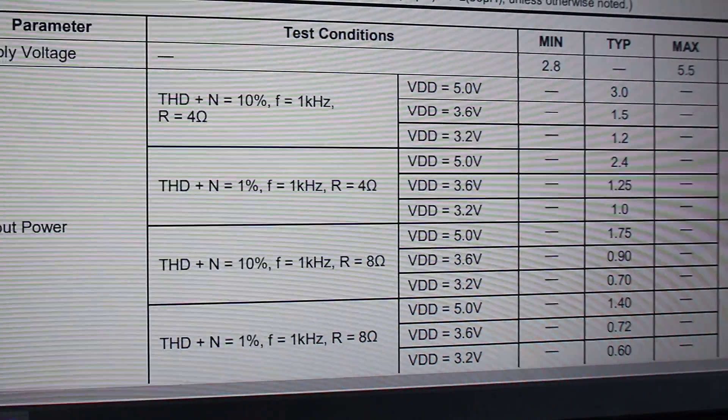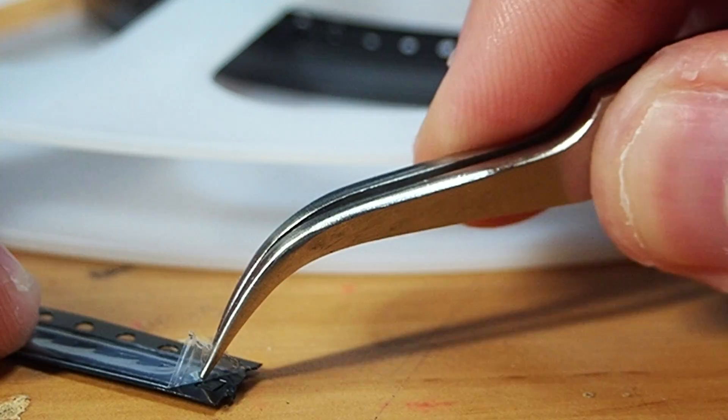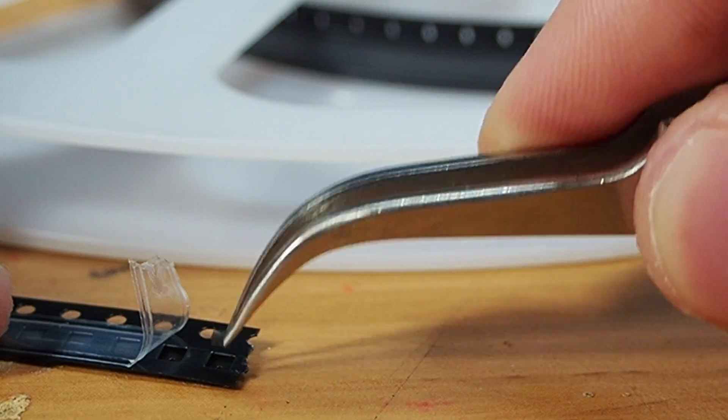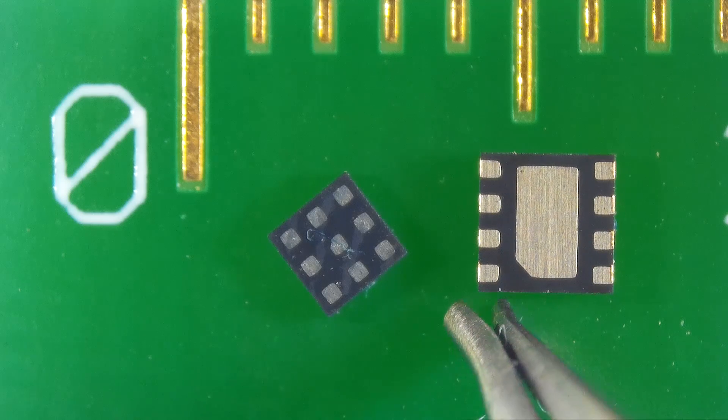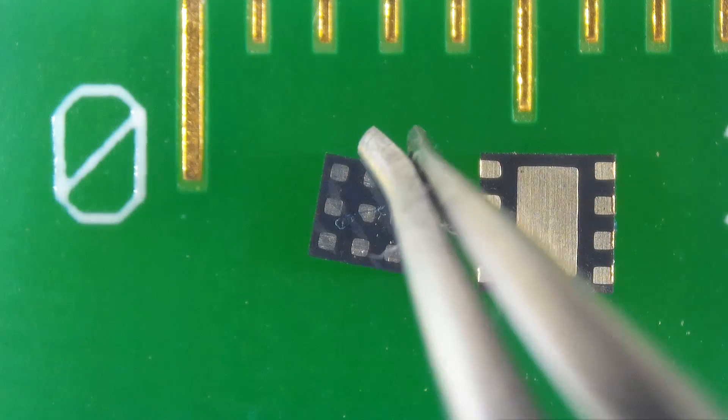So I decided to buy a reel of 100 which only cost me 24 dollars. And take a look at how small this is - its package only measures 1.5 by 1.5 millimeter. And this is how it compares to the old driver.